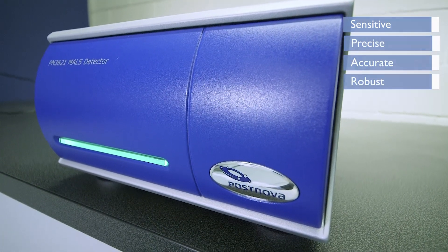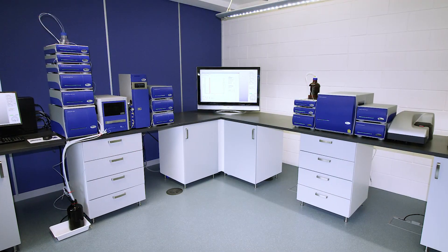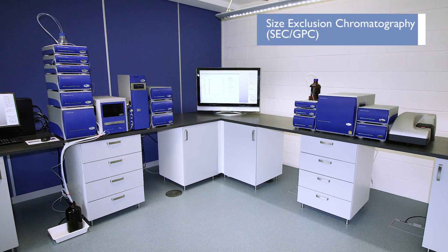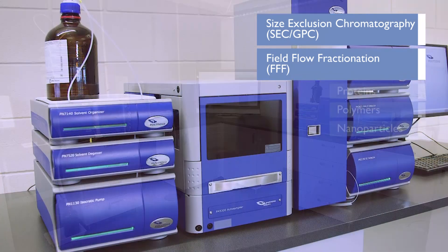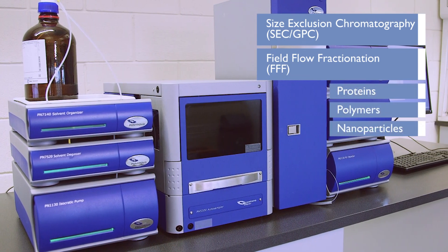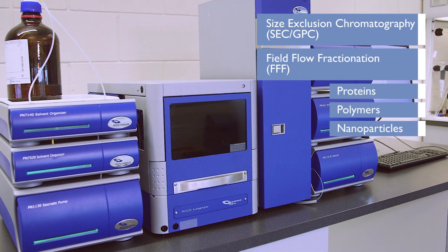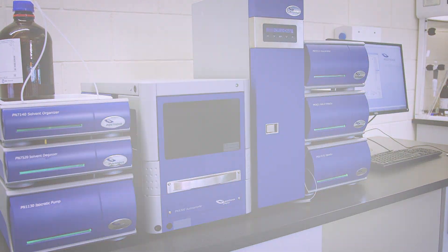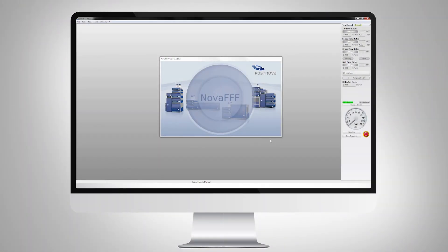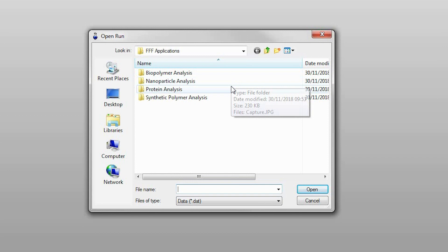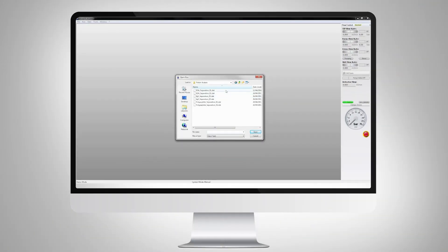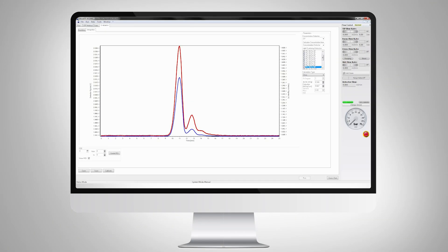The Postnova MALS can be used with any size exclusion chromatography or field flow fractionation systems to measure the absolute molecular weight and particle size of proteins, polymers and nanoparticles. For proteins, after separation by SEC or FFF, the MALS can be used to measure the molecular weight and oligomeric state, plus identify and quantify any higher order aggregates.